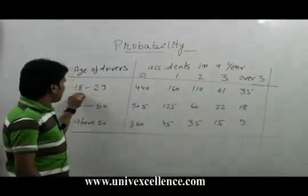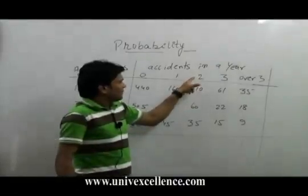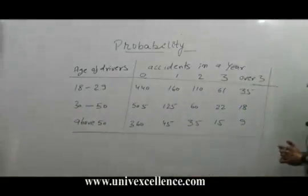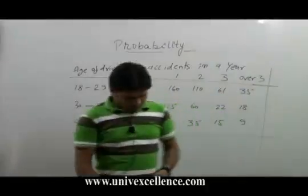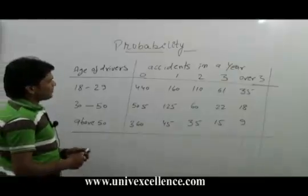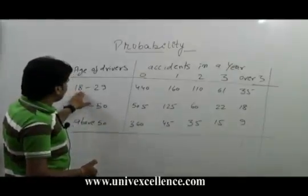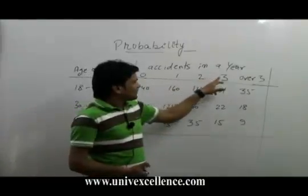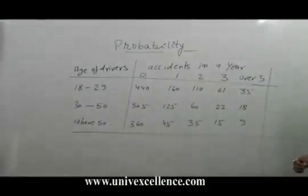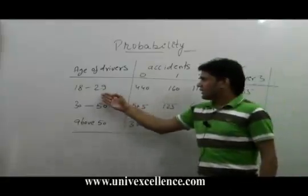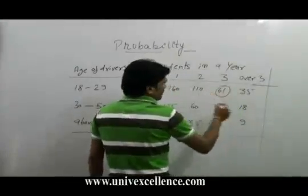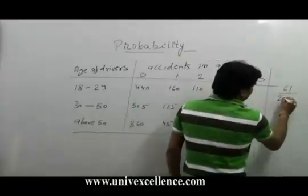The number of people whose age is between 18 to 29 and who met with exactly 2 accidents is also given in this table. Suppose the question is: what is the probability of drivers of age 18 to 29 with exactly 3 accidents? In that case, the probability would be 61 divided by 2000.